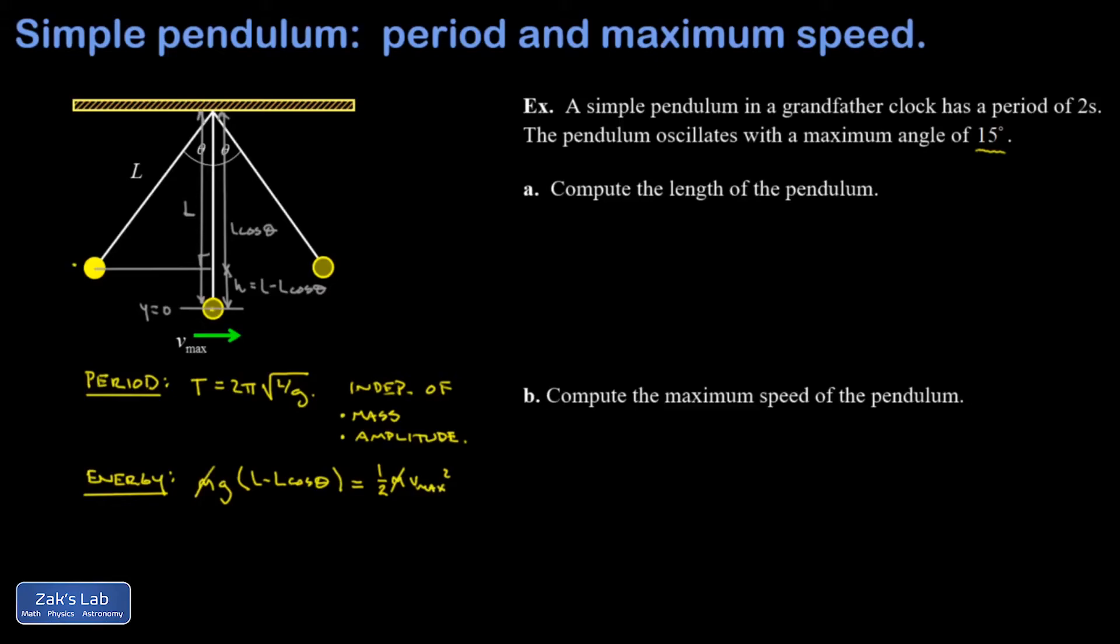I multiply by two and square root both sides. And I'm going to go ahead and factor an L out of those parentheses at the same time. So I have the square root of 2GL times the quantity 1 minus cosine theta. All of that square rooted gives me the maximum speed.